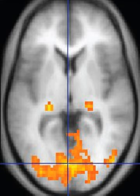Magnetic resonance imaging is a medical imaging technique used in radiology to form pictures of the anatomy and the physiological processes of the body in both health and disease. MRI scanners use strong magnetic fields, magnetic field gradients, and radio waves to generate images of the organs in the body. MRI does not involve X-rays or the use of ionizing radiation, which distinguishes it from CT or CAT scans and PET scans.